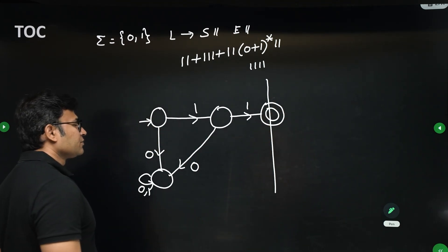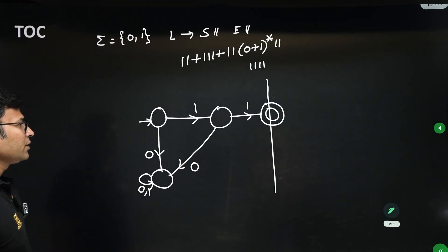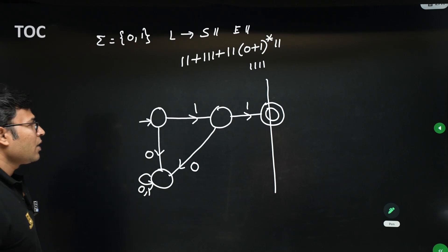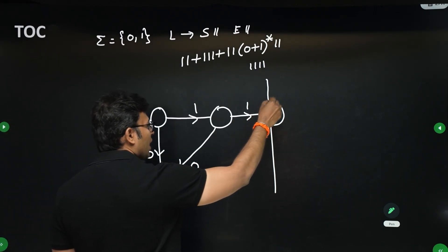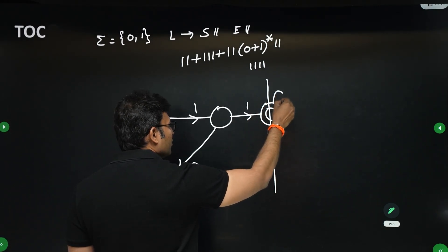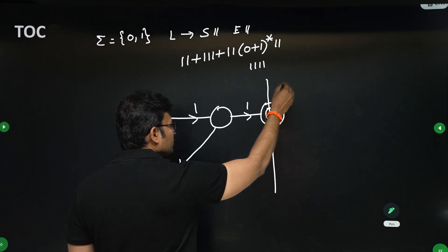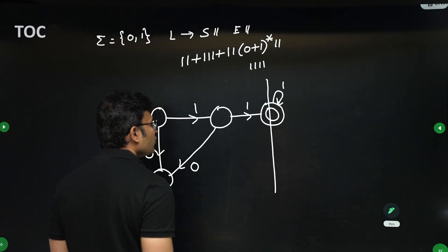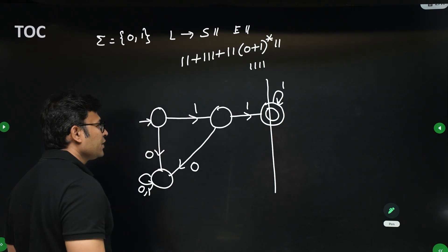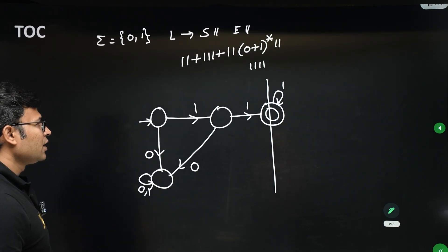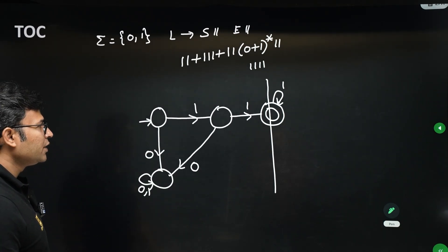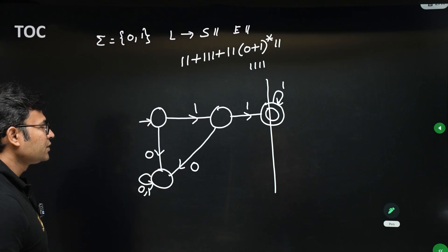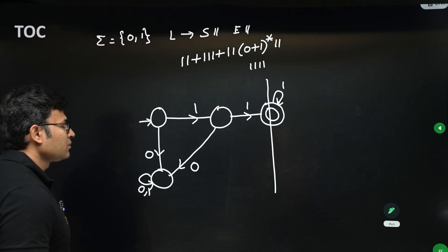After seeing '11', any number of ones may come — they will all be starting and ending with '11'. If you only get all ones, they will be starting and ending with '11'.